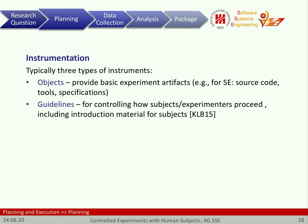The next category of instruments are guidelines. There are experimenter guidelines that give a step-by-step process on how the experiment should proceed and what the experimenters should do — for example, first give participants this and that information, perhaps writing down precisely what is said word by word, then distribute the forms, etc. It's a step-by-step procedure for running the experiment, also to make it repeatable by others later on.